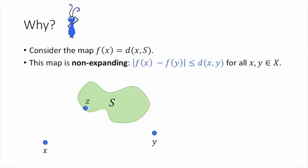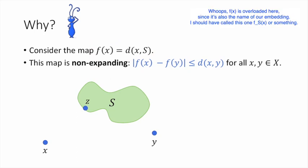Hopefully the definition of the embedding makes sense, but why is this a good idea? Let's see some intuition. So let's consider this map f(x), which just returns the distance between x and the set S. So this map has a nice property in that it is non-expanding. So by that I mean the distance between f(x) and f(y), which are just real numbers, so I just mean the absolute value of their difference, is no more than the distance between x and y in the original space.